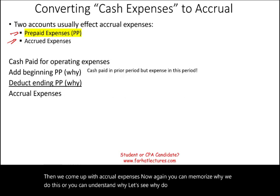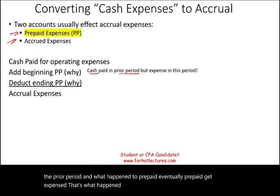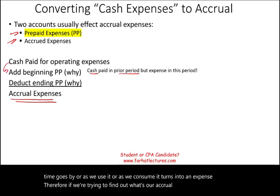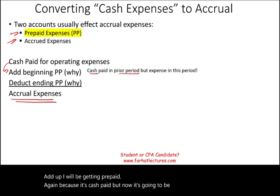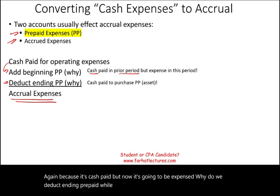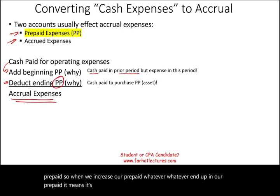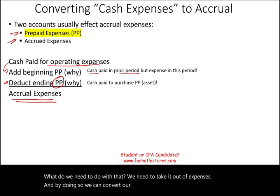Why do we add the beginning prepaid? This prepaid was cash paid in the prior period, and what happens to prepaid is it eventually gets expensed. We prepay for something, and as time goes by or as we consume it, it turns into an expense. Therefore, if we're trying to find our accrual expense, we need to add the beginning prepaid, because it was cash paid that's now going to be expensed. Why do we deduct ending prepaid? Ending prepaid is cash paid to purchase the prepaid — it's an asset, so we need to take it out of expenses.